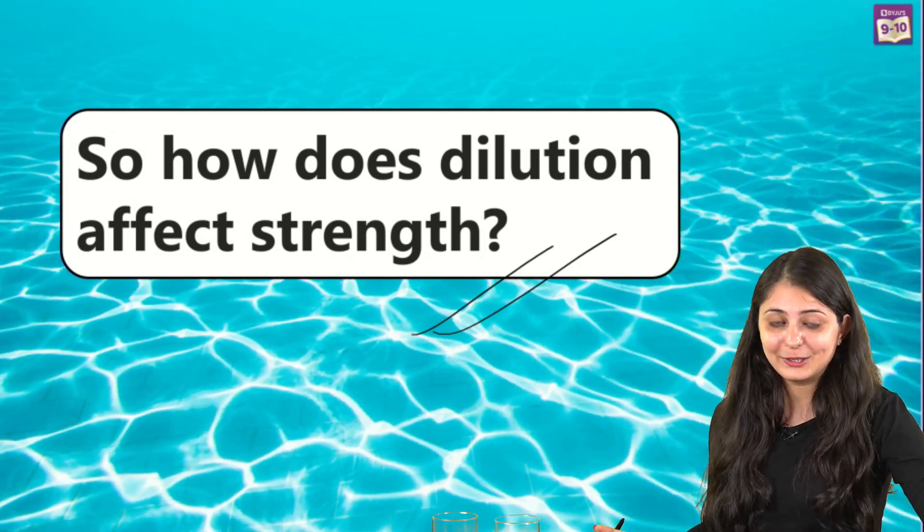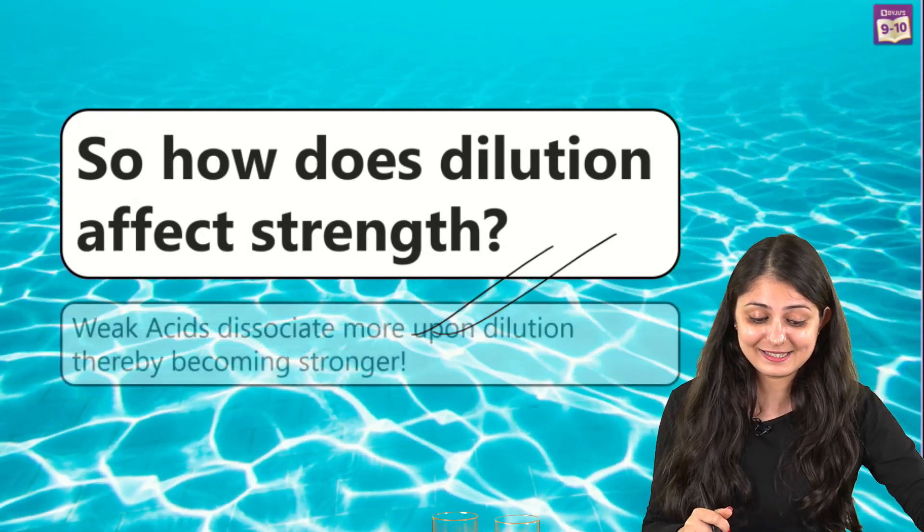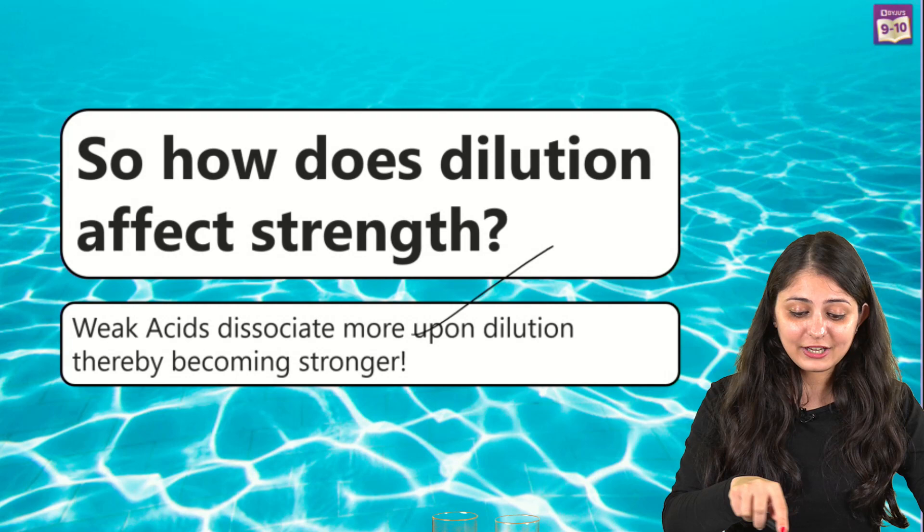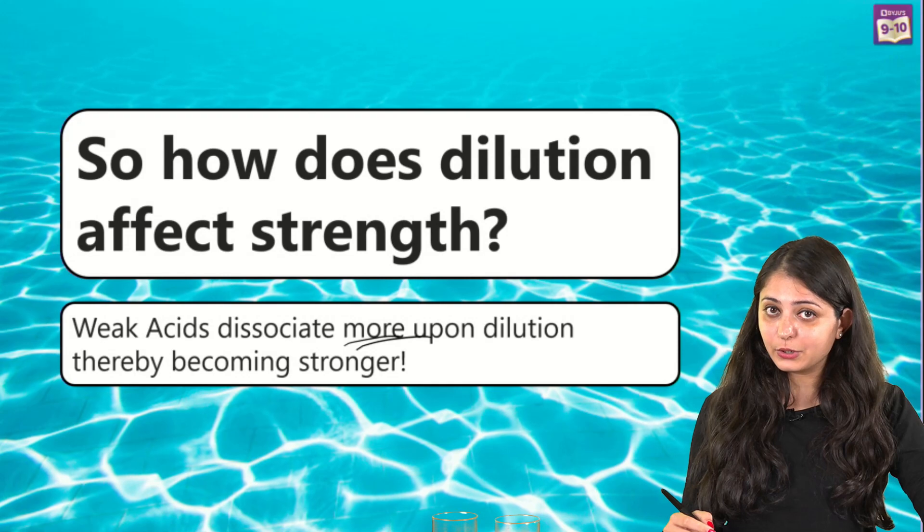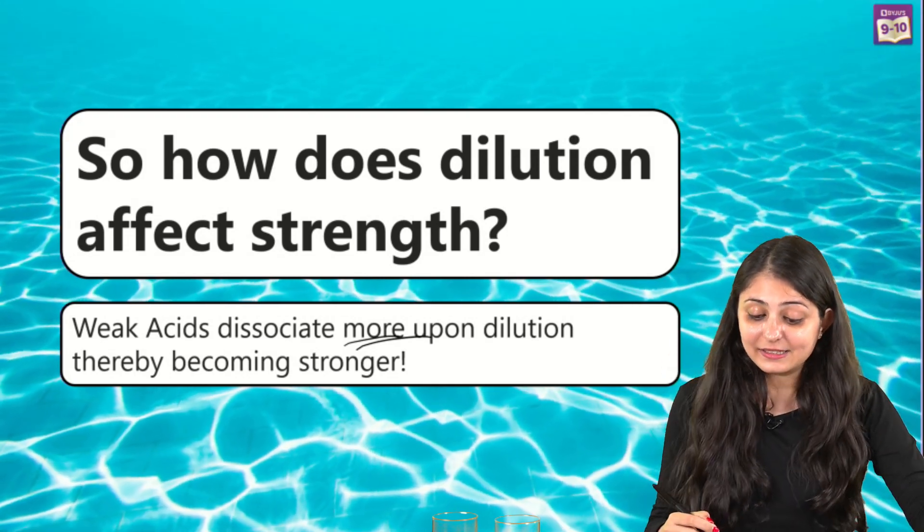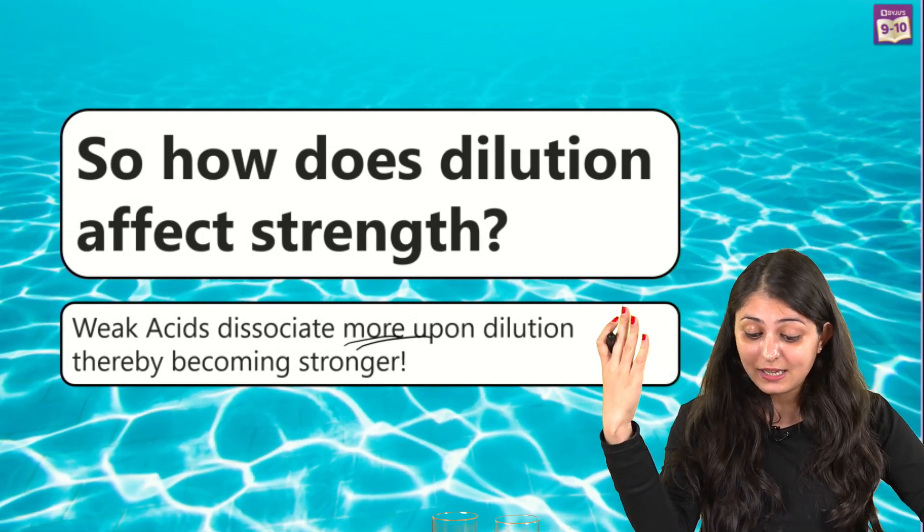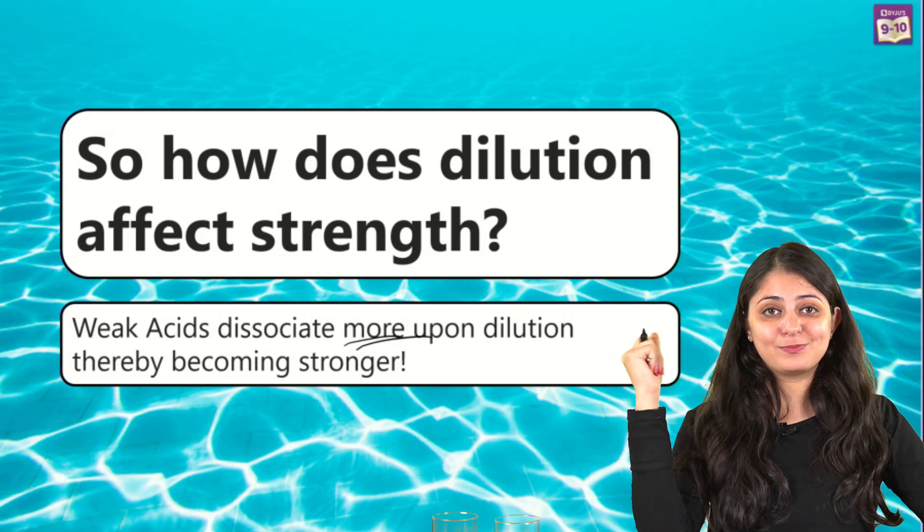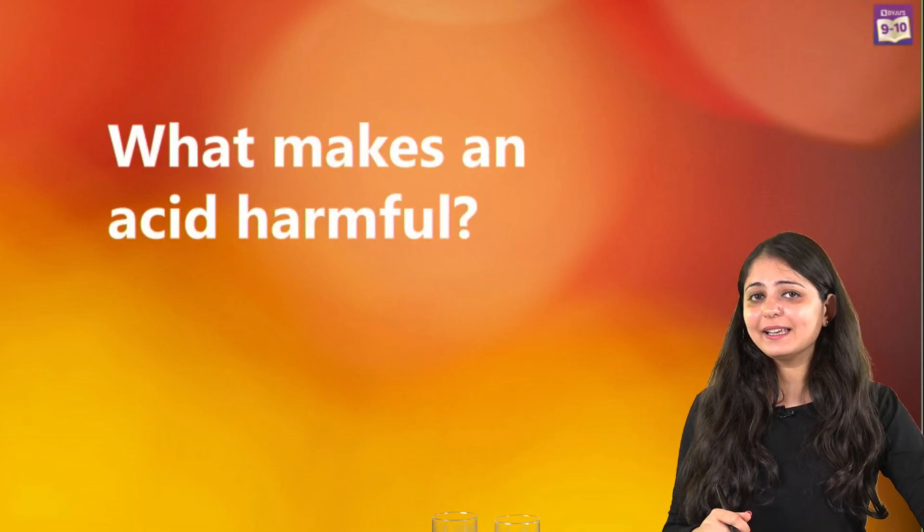But it's going to change everything for a weak acid. Weak acids are actually going to dissociate more upon dilution. So if we add water to, say, acetic acid, the undissociated molecules are going to break further and release more H+ ions. So yes, we can definitely say that diluting weak acids is actually going to strengthen it.